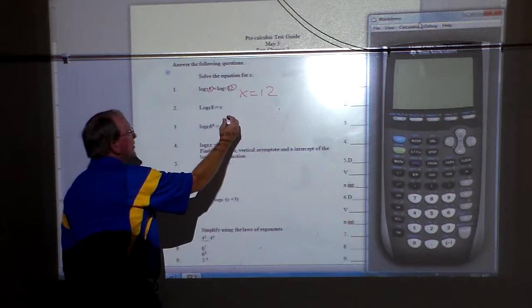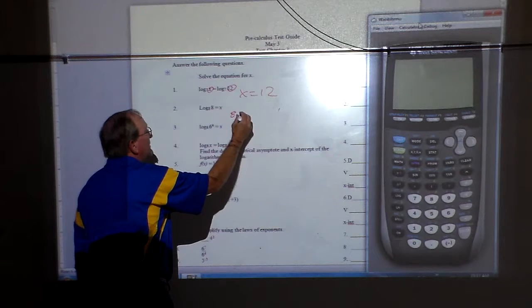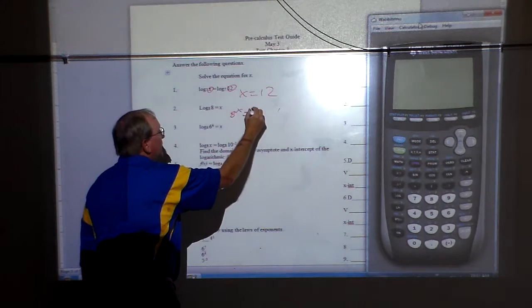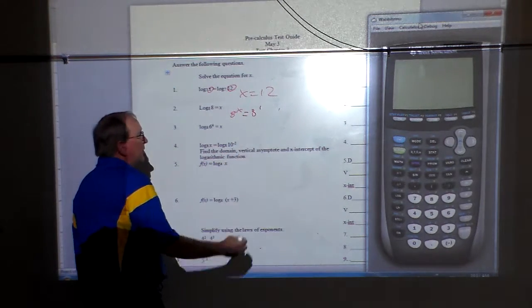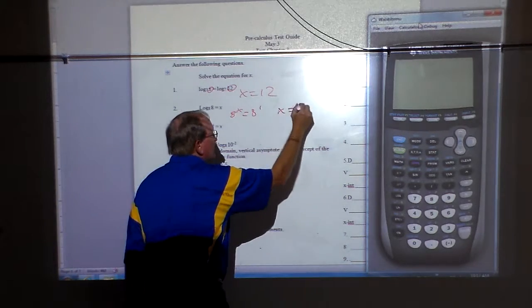And think of this here. On number 2, we have log base 8. So basically that means 8 to the x equals 8. Well, that's 8 to the first power, so x is 1.